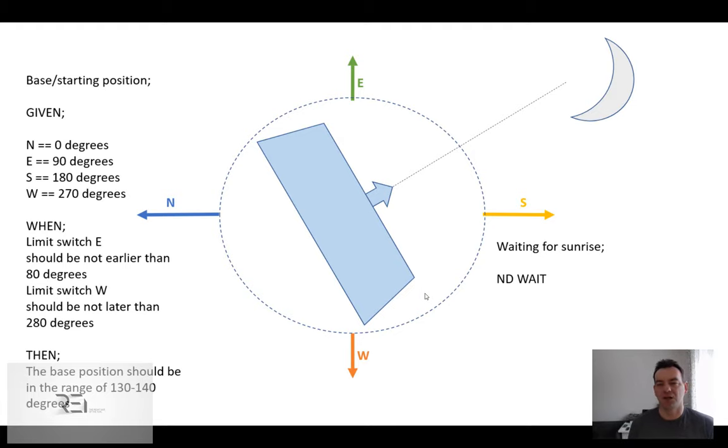In such cases, we have to make sure that the tracker will not fall behind the sun and will follow the sun correctly, even on cloudy days. In most cases, people have a problem with where to set the limit switches and why.